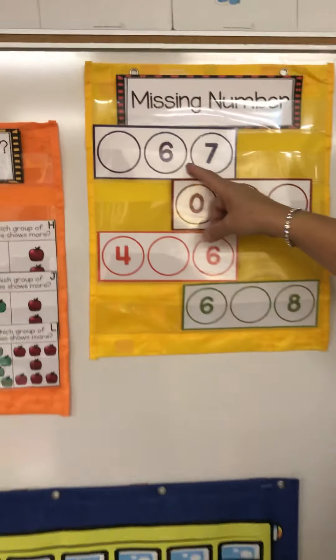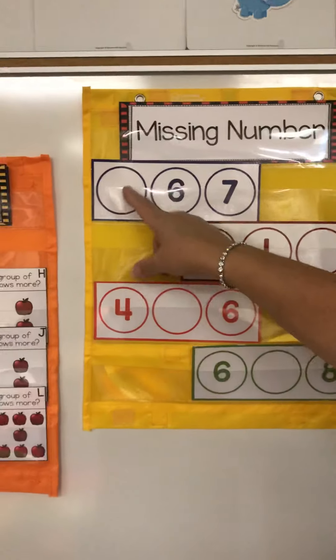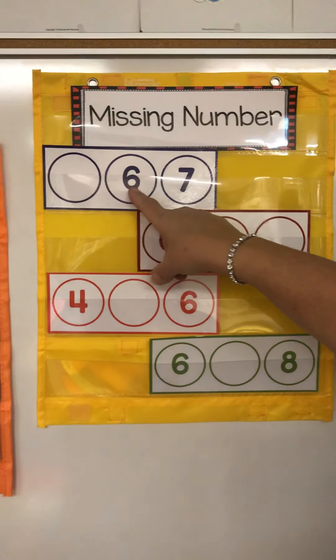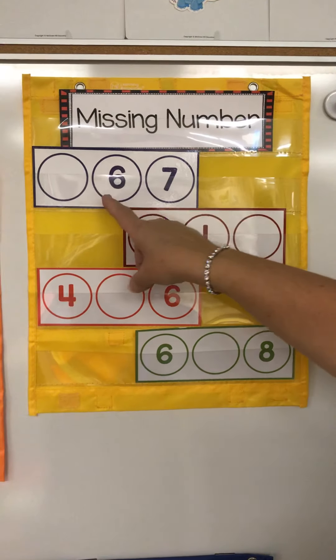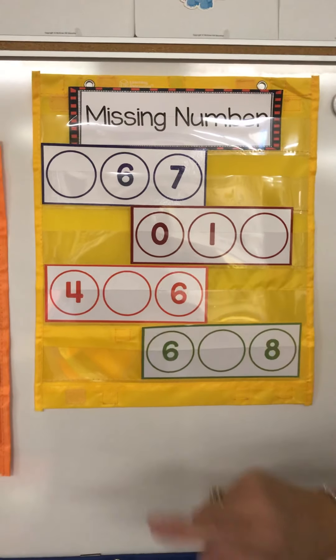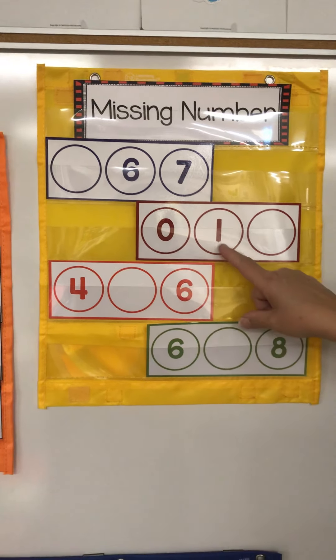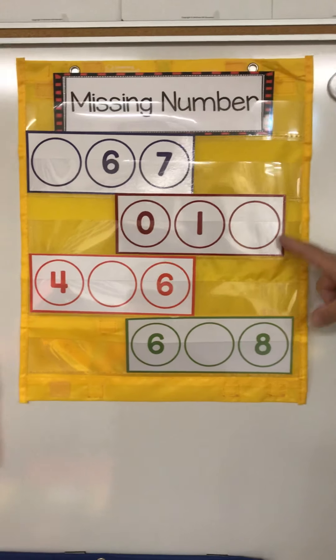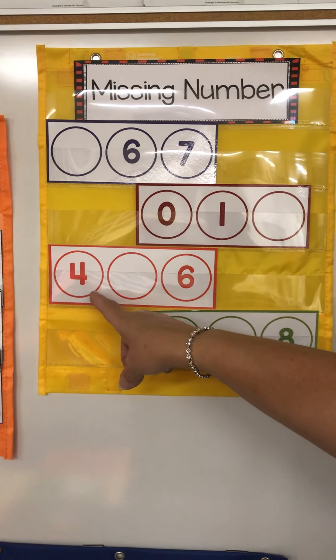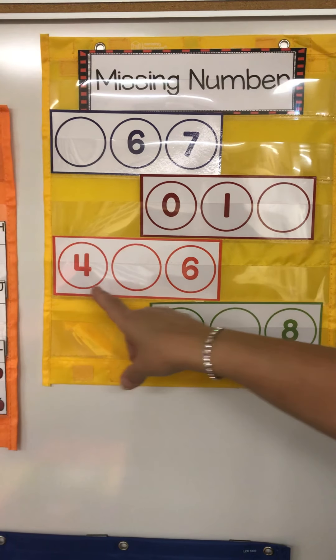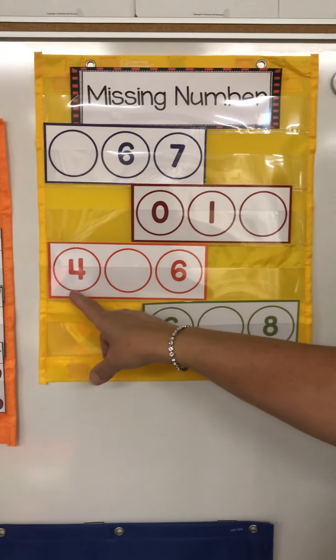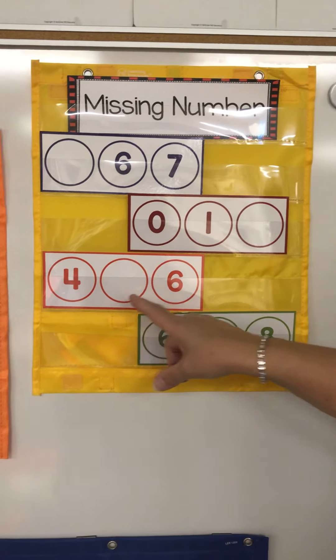Let's find our missing numbers. Something that comes before 6. What number comes before 6? 5. 0, 1, 2. 4, something, 6. What comes between 4 and 6? 4, 5, 6.